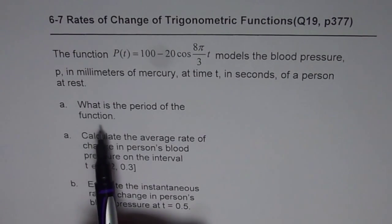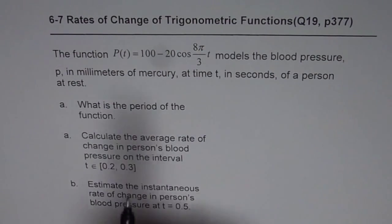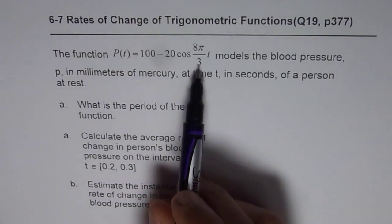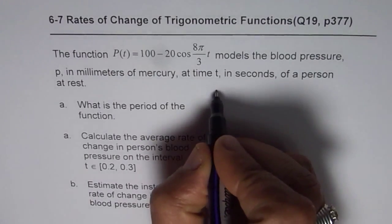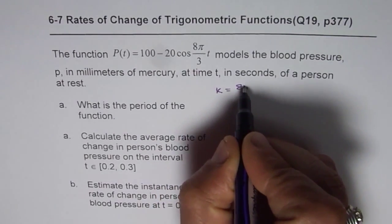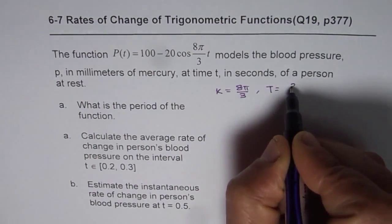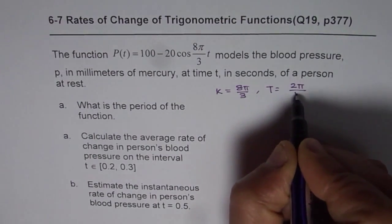Now to find the period of the function, let's look into the function itself and the k value, which is cos 8π/3. So from here we know k equals 8π/3. Time period T is 2π/k.